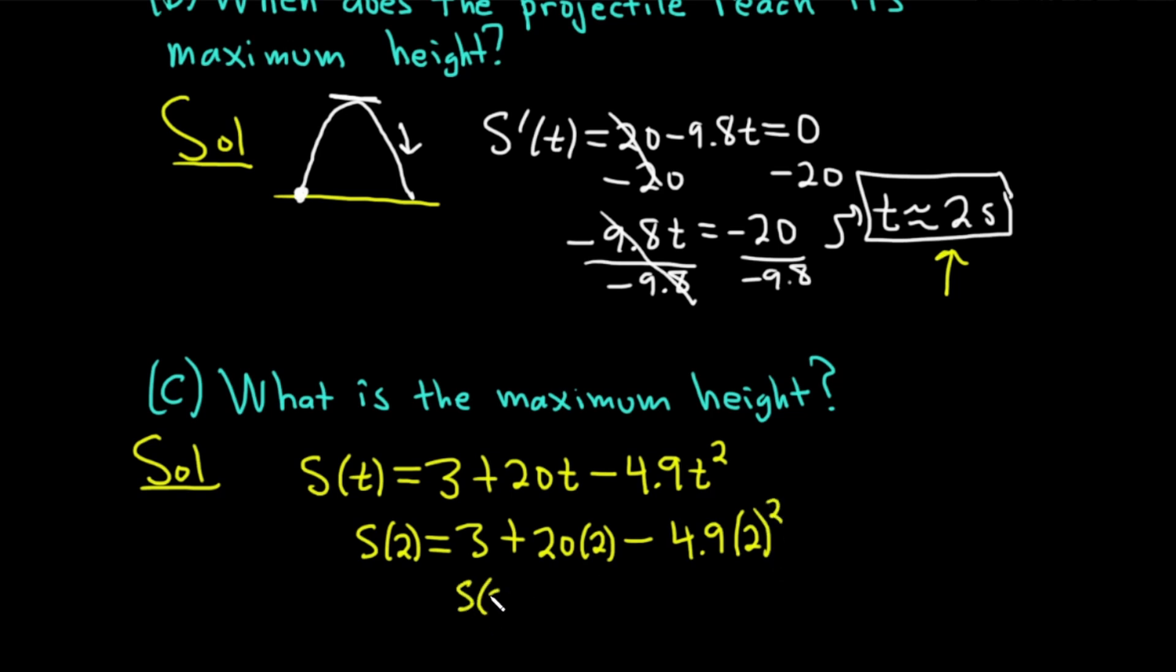So s(2), put this in your calculator, approximately equal to 23.4 and the units were meters. So that would be the maximum height.